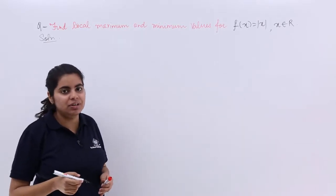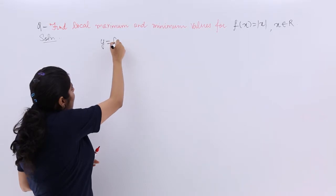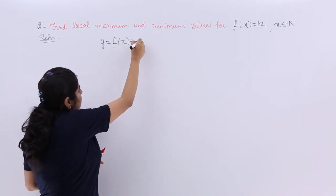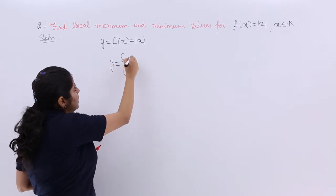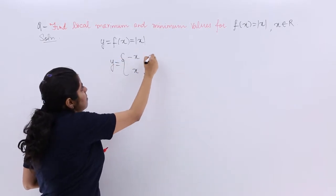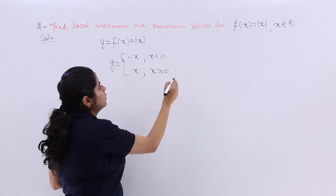I have written the solution, let's start with it. Simply speaking, f(x) is given to you as |x|, and you know how to expand it. So y would be -x when x < 0, and x when x ≥ 0.